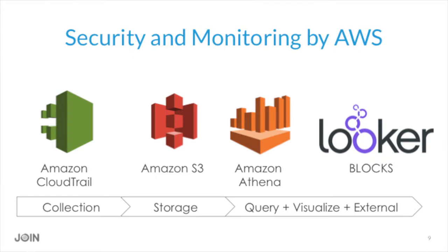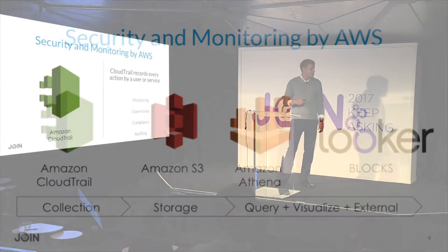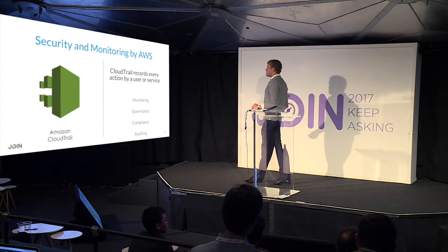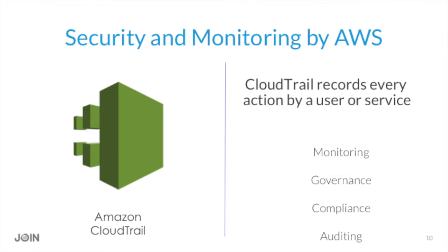Next we're looking at security and monitoring. We have a similar pipeline: taking log trails from CloudTrail, dumping them into S3, and using Athena on top because it's a large quantity of data and much easier than setting up an entire ETL process. CloudTrail is a service provided by AWS that records every action taken in your entire AWS environment — anytime someone queries a database, encounters an error, or logs into the console. It includes who took the action, where it was taken, and other relevant information.